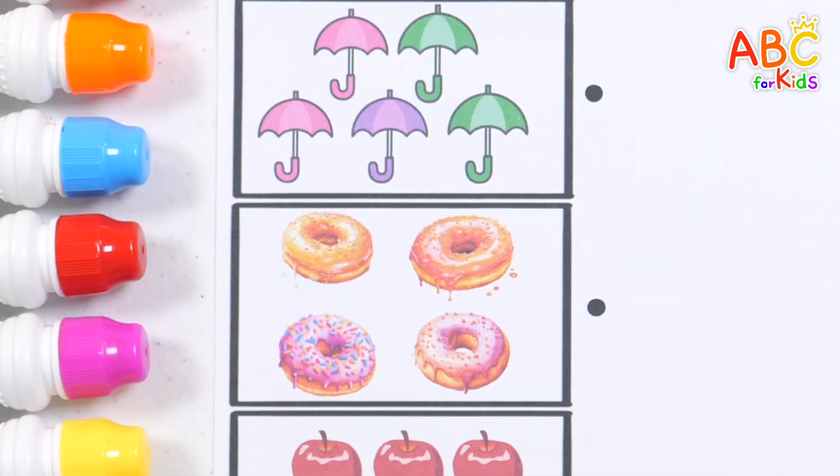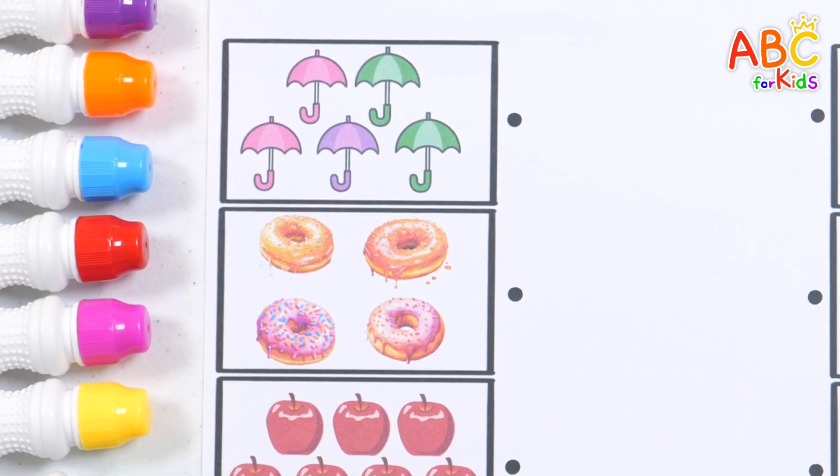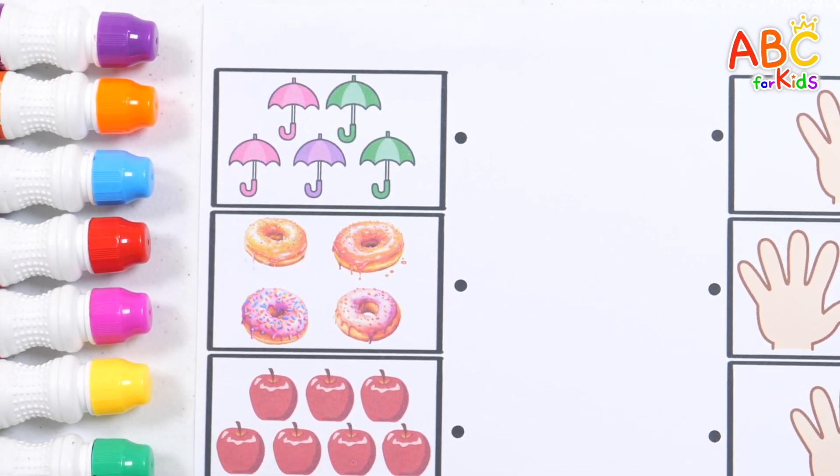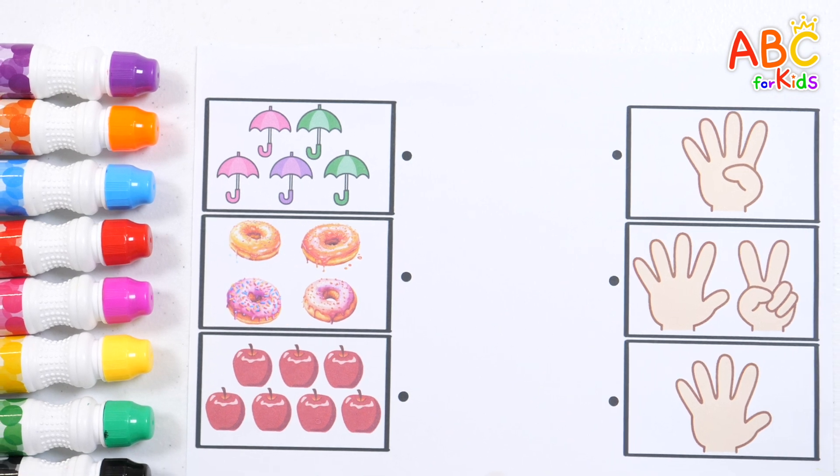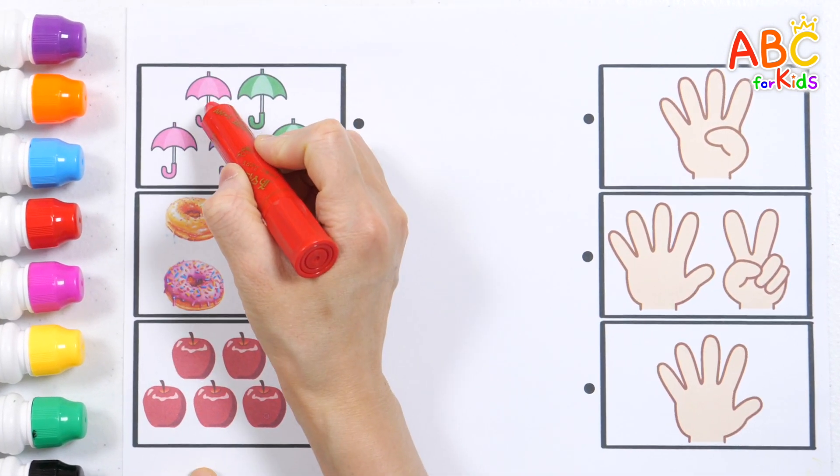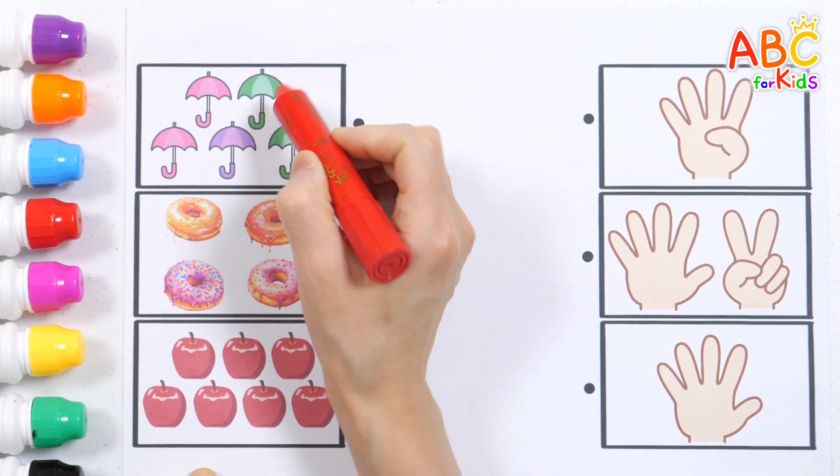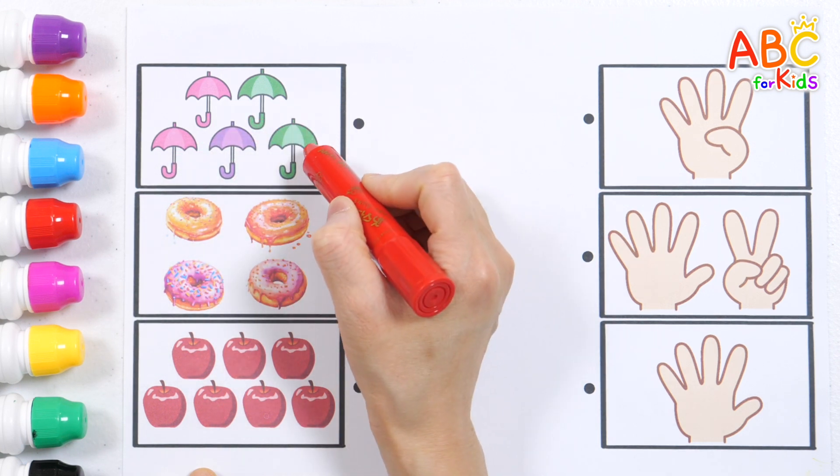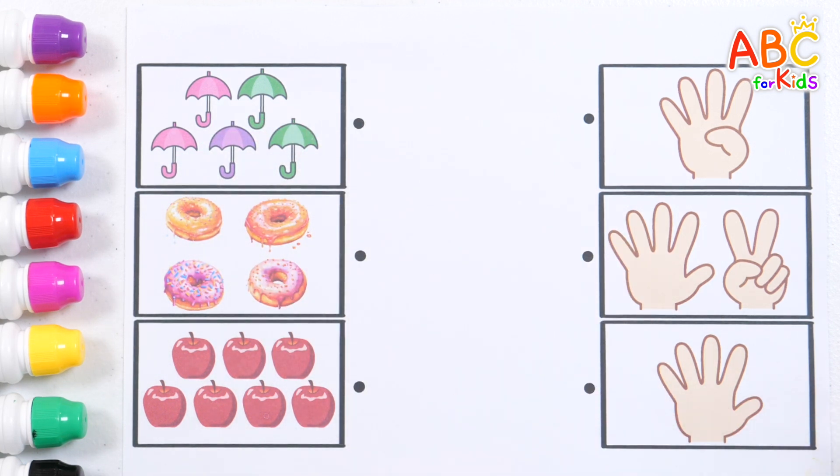Let's look at the picture and find the same numbers and connect them. First, let's count how many umbrellas there are. 1, 2, 3, 4, 5. 5 umbrellas!